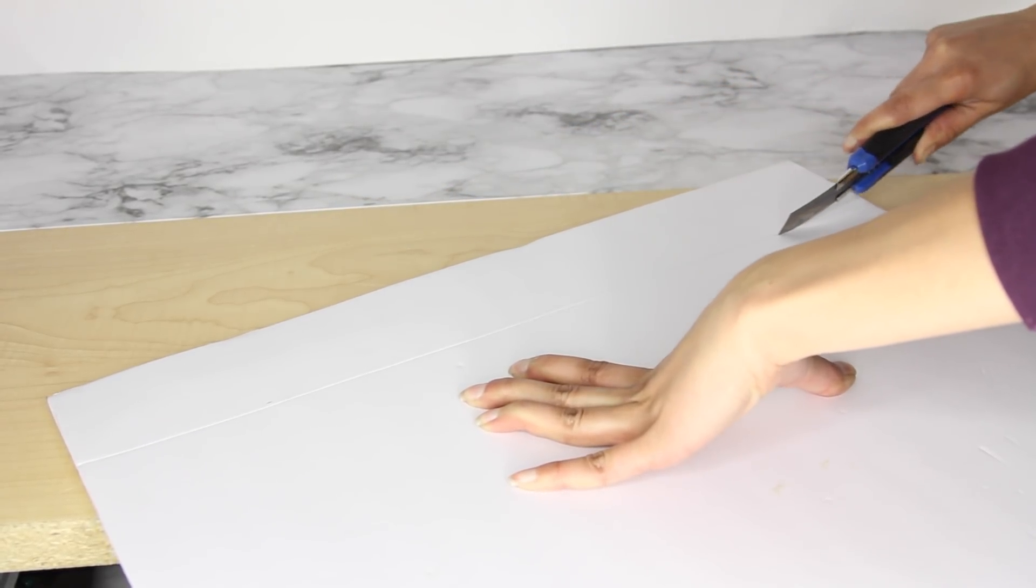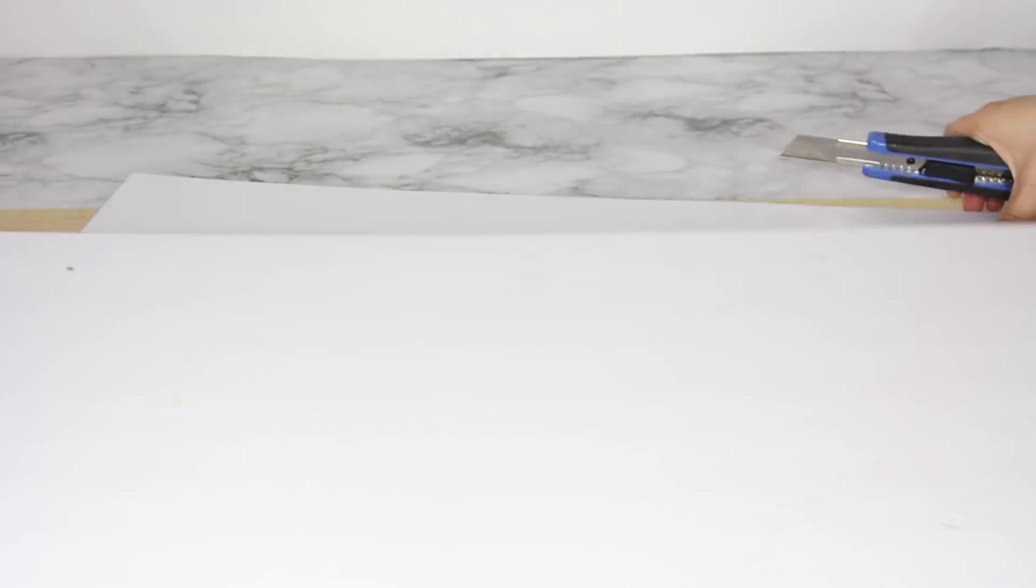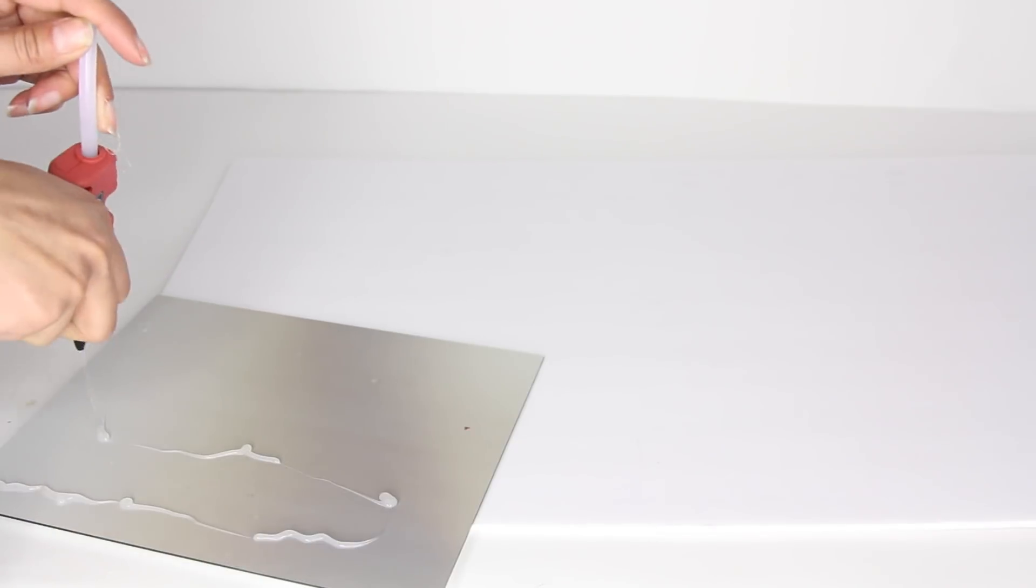Now to glue the mirrors, I'm using a hot glue gun and that's just for video purposes. You really do want to use a glue that is heavy duty. I'm just using a hot glue gun because it dries quickly, and what you're going to do is glue your pieces of mirrors.